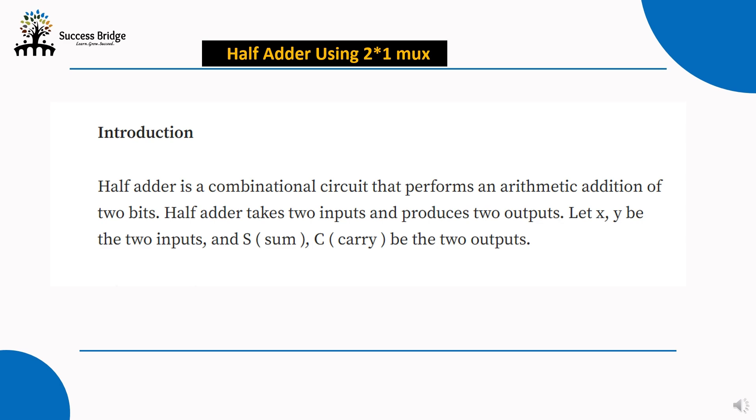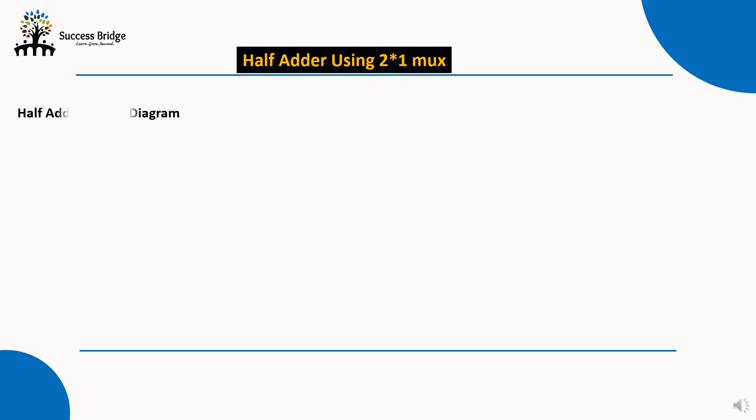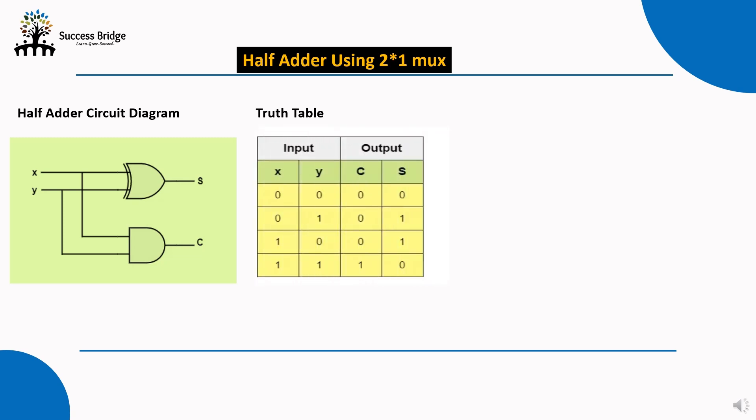The half adder has two outputs: sum and carry. We can see the circuit diagram of the half adder and its truth table. In the truth table there are two inputs x and y, giving four possible input combinations: 0-0, 0-1, 1-0, and 1-1. The output variables sum (S) and carry (C) are represented in the form of sum of minterms.